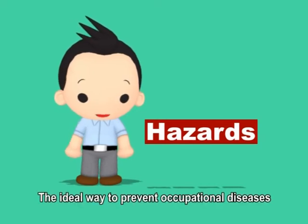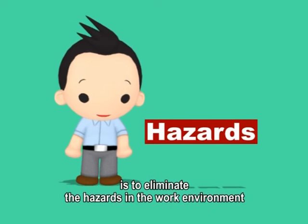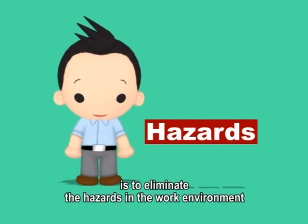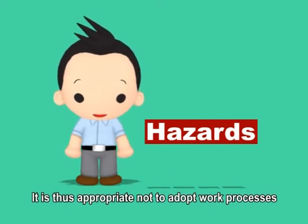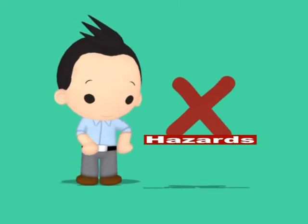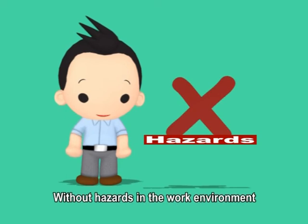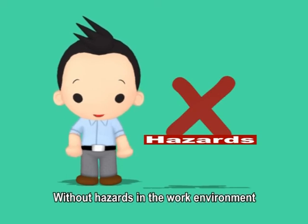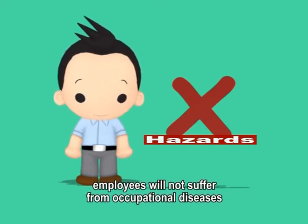The ideal way to prevent occupational diseases is to eliminate the hazards in the work environment. It is thus appropriate not to adopt work processes that will generate hazards. Without hazards in the work environment, employees will not suffer from occupational diseases.